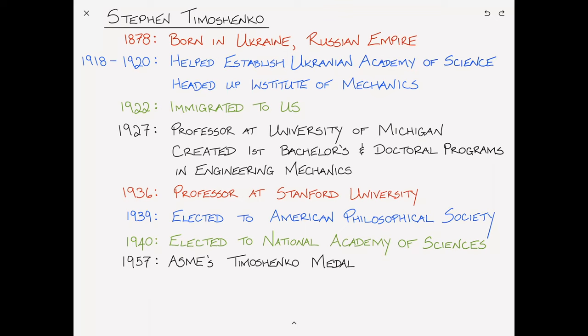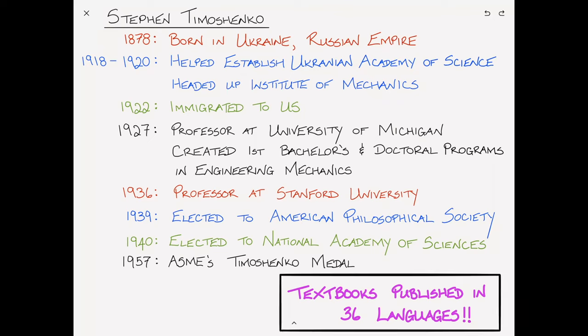Indeed, Timoshenko's textbooks, of which there are several, have been published in 36 languages. Just consider that for a minute. Can you even name 36 languages? There's not a country in the world where mechanical engineers do not know the name Stephen Timoshenko. Timoshenko eventually died in 1972 at the age of 93, and as a result, some of you who are viewing, your existence overlapped with Timoshenko's.